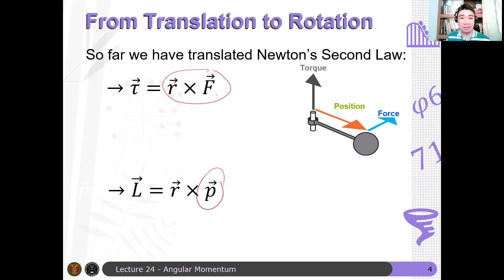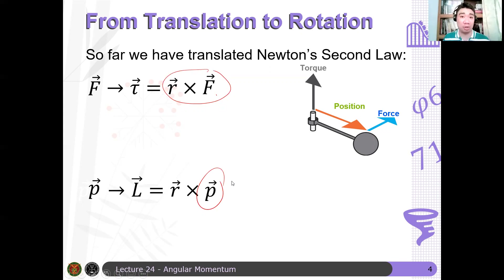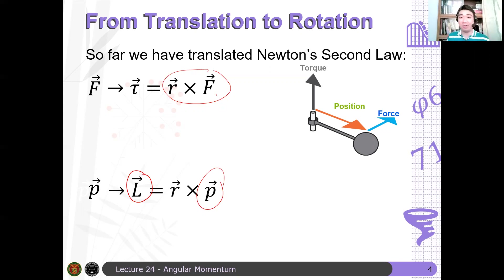The question now is: the rotational analog of force is torque, and then the rotational analog of momentum is defined as some angular momentum L. Is this the correct definition of angular momentum? I just defined it as r cross p. For the meantime, let's accept that. We will show later that this is indeed the correct angular momentum expression.